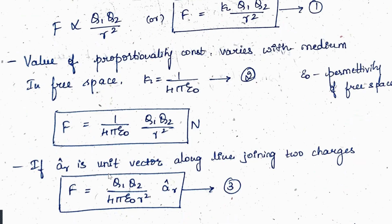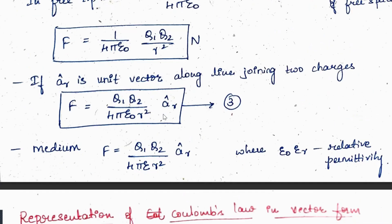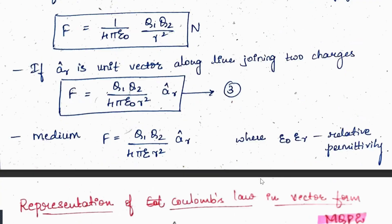Removing the proportionality sign and introducing constant k = 1/(4πε₀), where ε₀ is the permittivity of free space: F = Q1·Q2 / (4πε₀·r²) newtons. If the medium is free space, use ε₀; if it is any other medium, use ε = ε₀·εr, where εr is the relative permittivity.